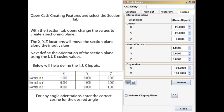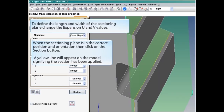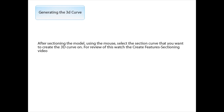You may want to pause the video to view the normal vector information. When the sectioning plane is in the correct position and orientation, click on the Section button. A yellow line will show the section line. After sectioning the model, using the mouse, select the section curve that you want to create the 3D curve on. For review of this, watch the Create Features sectioning video.